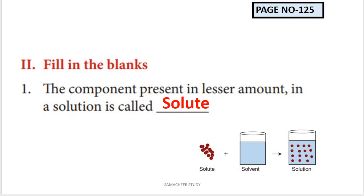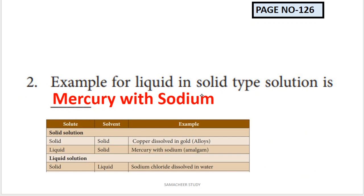Example for a liquid in solid type solution: in this type, the solute is liquid and the solvent is solid. The example is mercury with sodium - mercury is in the liquid phase and sodium is in the solid phase. This type of solution is called an amalgam.